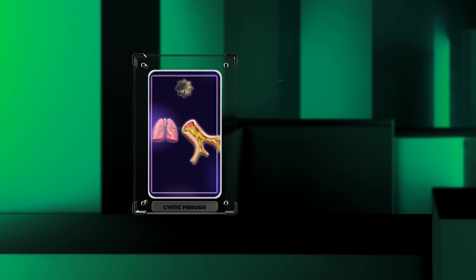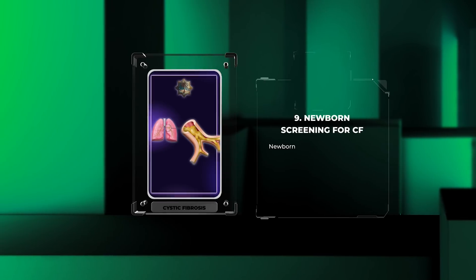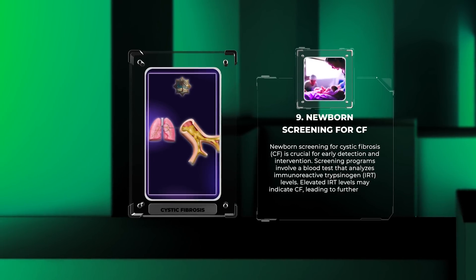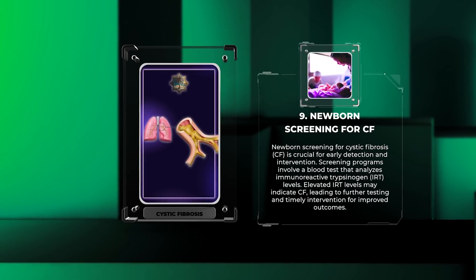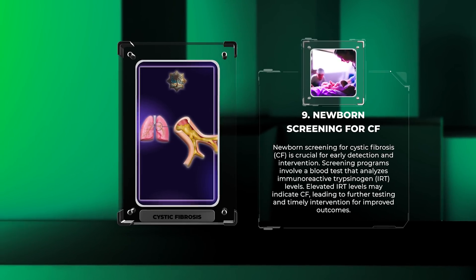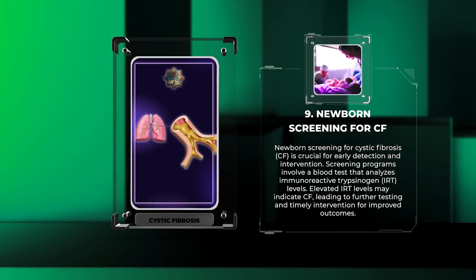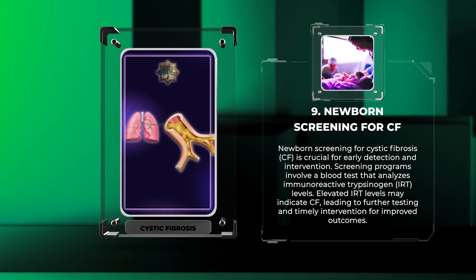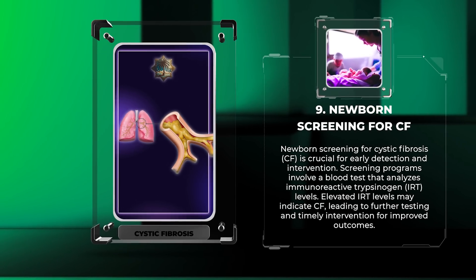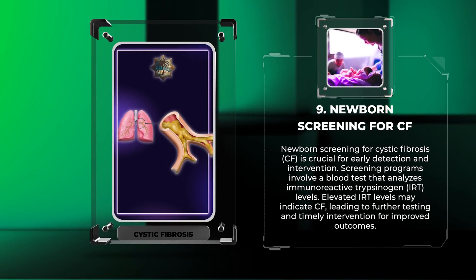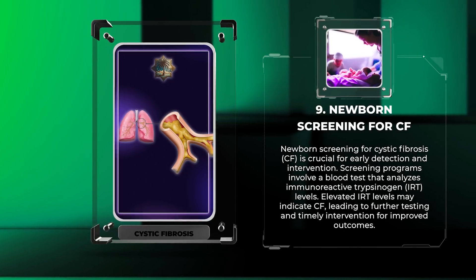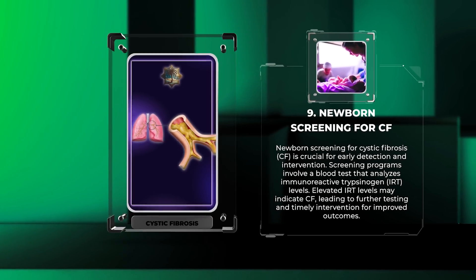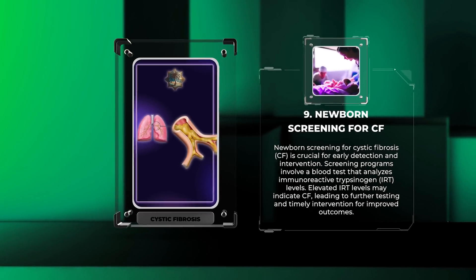Newborn screening for cystic fibrosis is crucial for early detection and intervention. Screening programs involve a blood test that analyzes immunoreactive trypsinogen (IRT) levels. Elevated IRT levels may indicate CF, leading to further testing and timely intervention for improved outcomes.